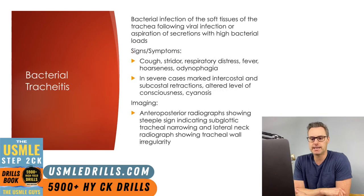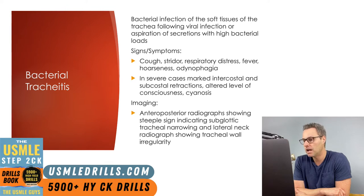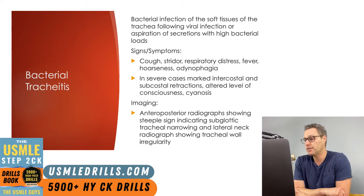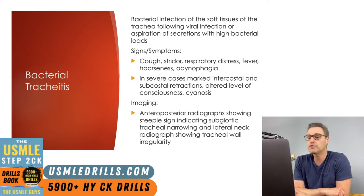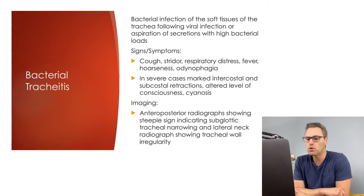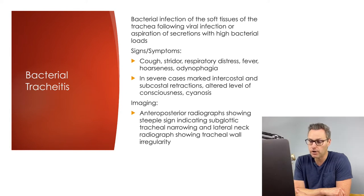Next up, we've got bacterial tracheitis. This is an exudative bacterial infection of the soft tissues of the trachea that oftentimes follows a viral infection, most often parainfluenza and influenza types A. It can also occur when the trachea is inoculated with bacteria-containing secretions, such as from strep pharyngitis, acute bacterial sinusitis, or even after a tonsillectomy. Most often, the pathogen causing bacterial tracheitis is Staph aureus, though Strep pneumonia and group A Strep can also be seen.